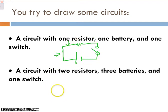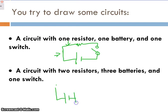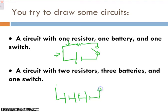A circuit with two resistors, three batteries, and one switch gets a little more confusing. The important thing here is that every time I draw a battery, I connect the small end of the terminal to the large end — in other words, positive to negative. I'll throw my switch on the side again, two resistors, and that's my circuit.